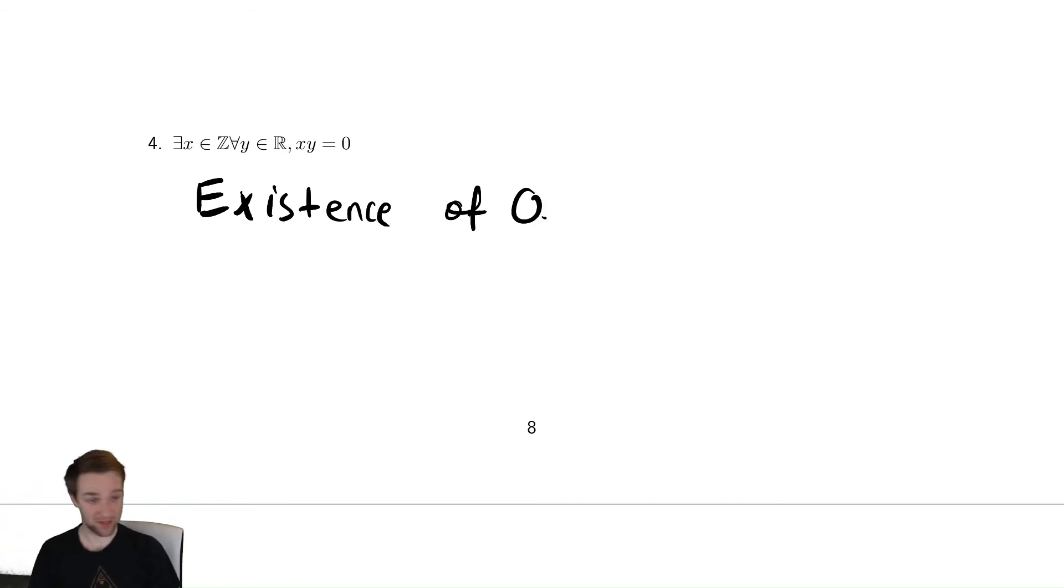And you could find it by just saying what is x? x is equal to zero. It's a there exist statement. And we know zero times y, no matter what y is, is equal to zero. So we prove it again by finding an example, because it's a there exist statement.